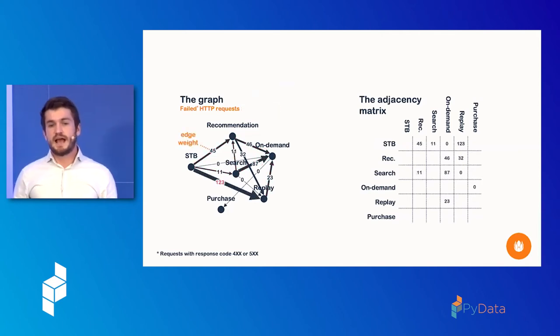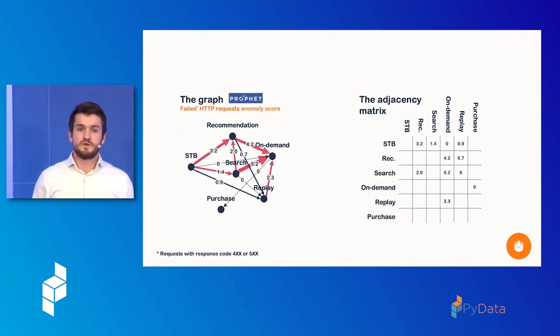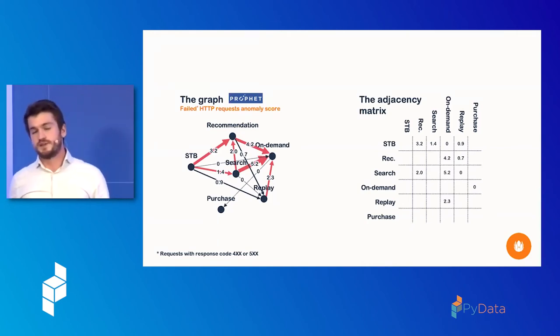But, as you can imagine, this might not say a lot. That suggests that this number 123 is the highest, but we don't know if that's actually normal behavior. Maybe that's actually always around this number, so maybe we can do some sort of normalization of this. So, for this, we've used Prophet to normalize these time series to an anomaly score, so that at any given time, we know how anomalous the requests from one service to the next are.